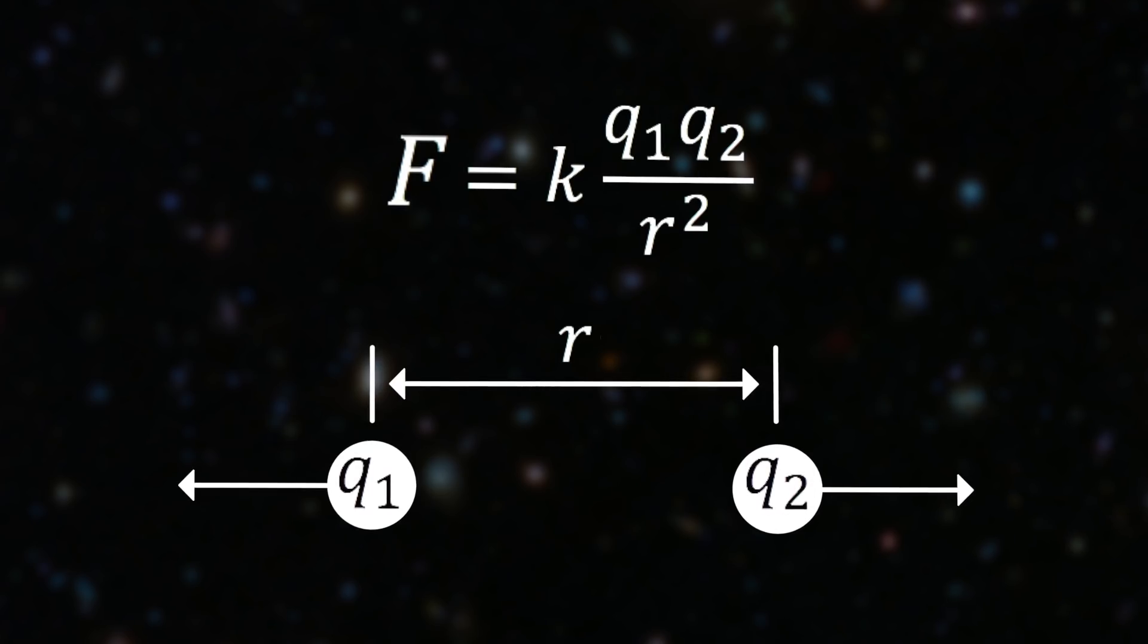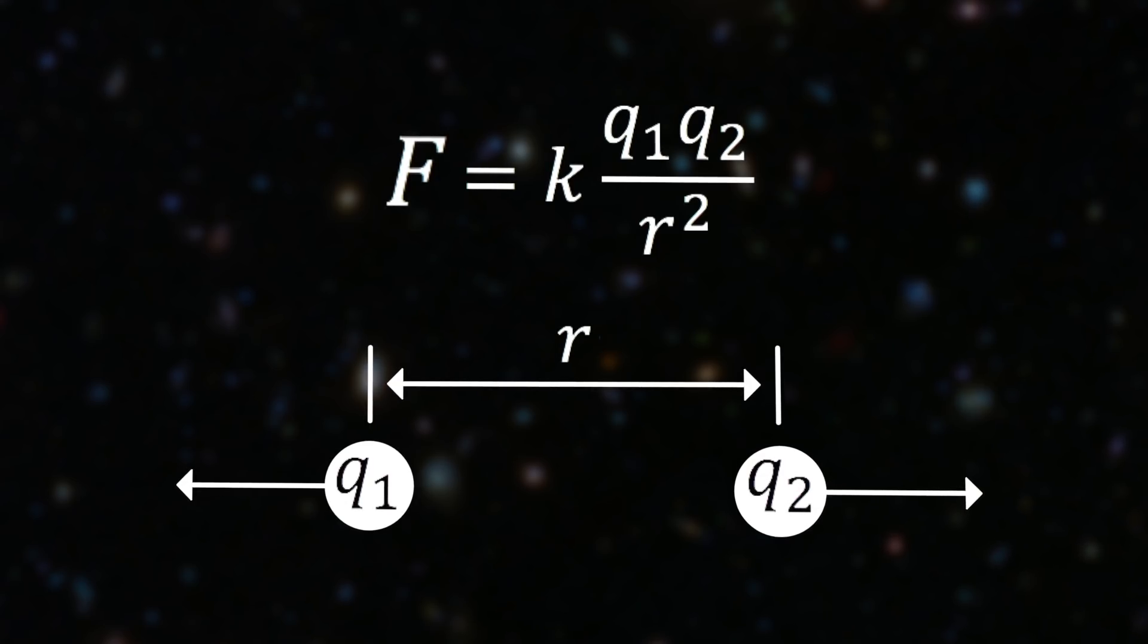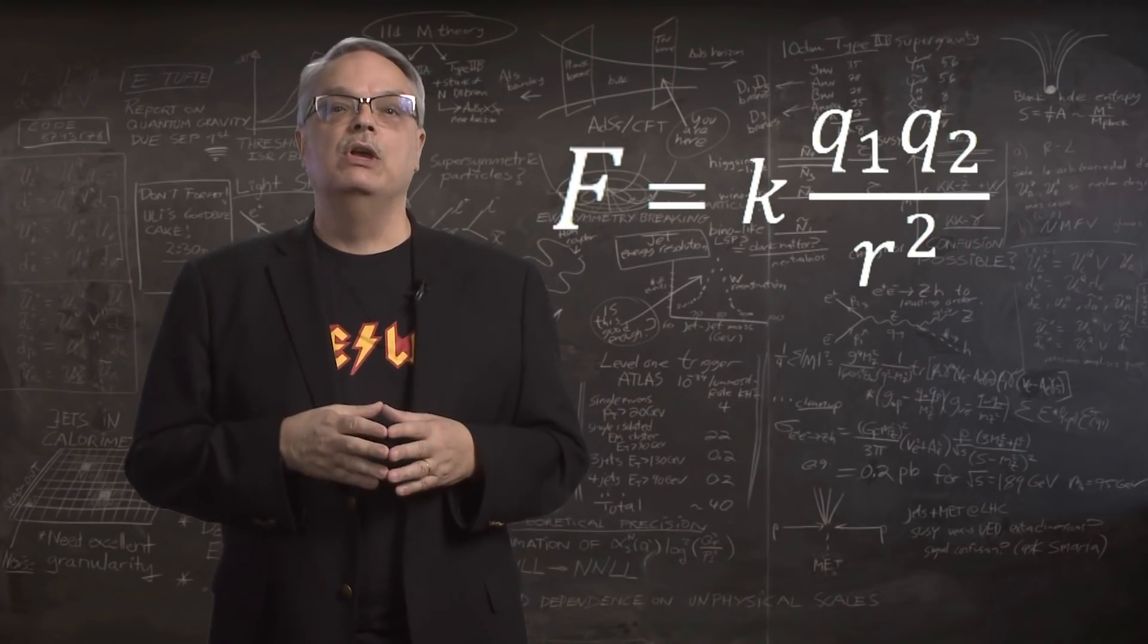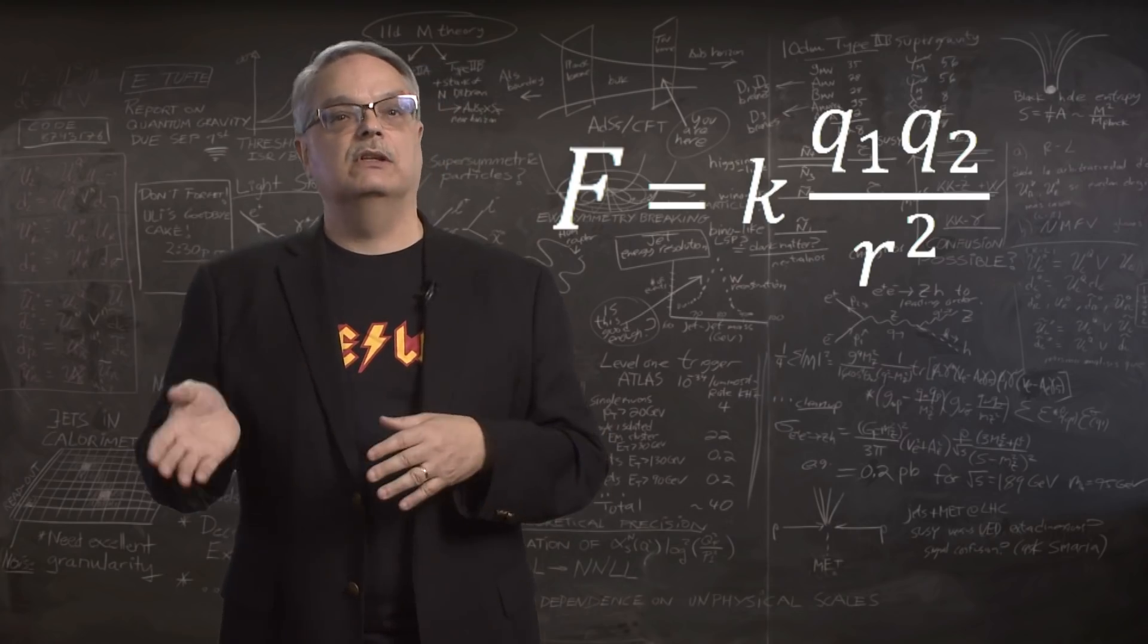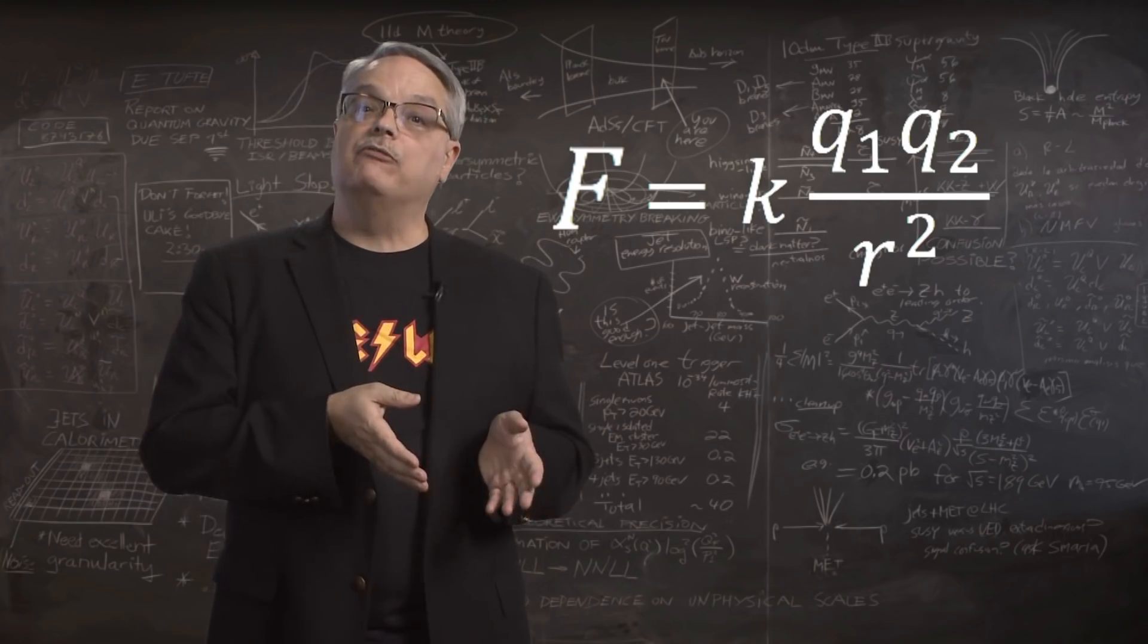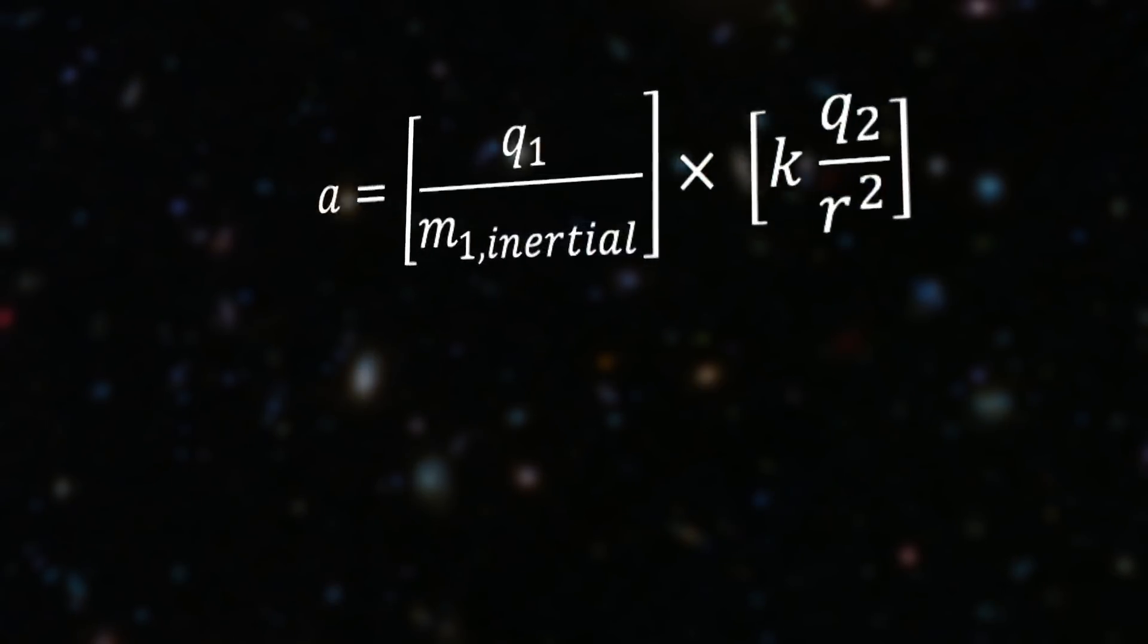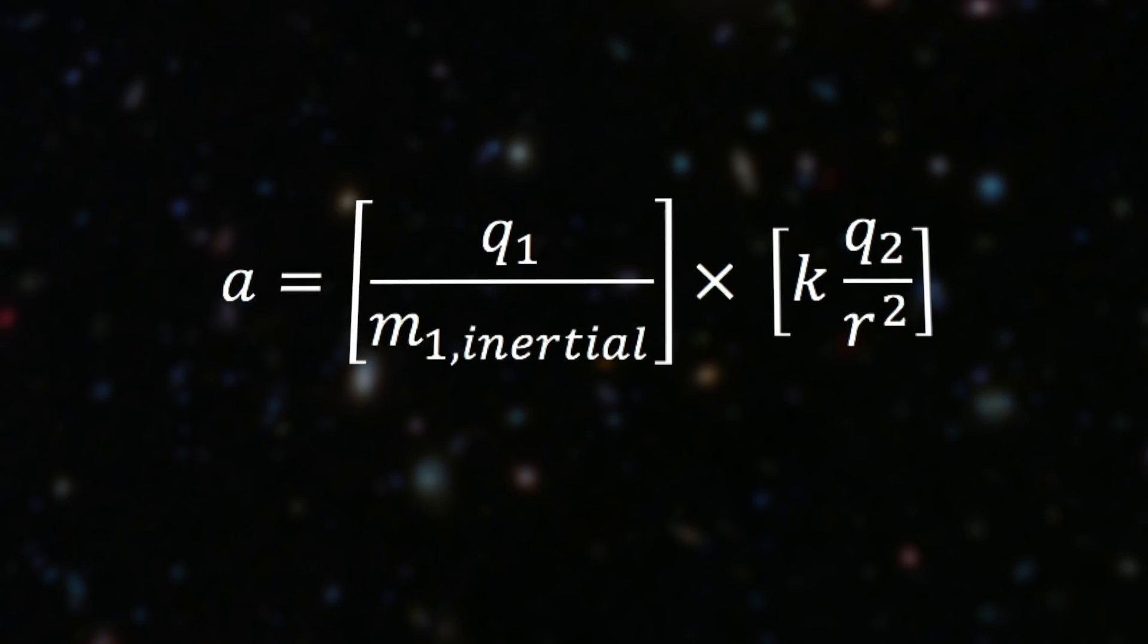It can be written as F equals k times q1 q2 divided by r squared. In this case, k is a constant and q means charge. If we ask how an object moves under that force, we would then equate it to the inertial mass times acceleration. If we solve for acceleration, we'd see an equation like we've seen before, but the ratio would be the electric charge of the ball divided by its inertial mass. And we know that those two things don't cancel.